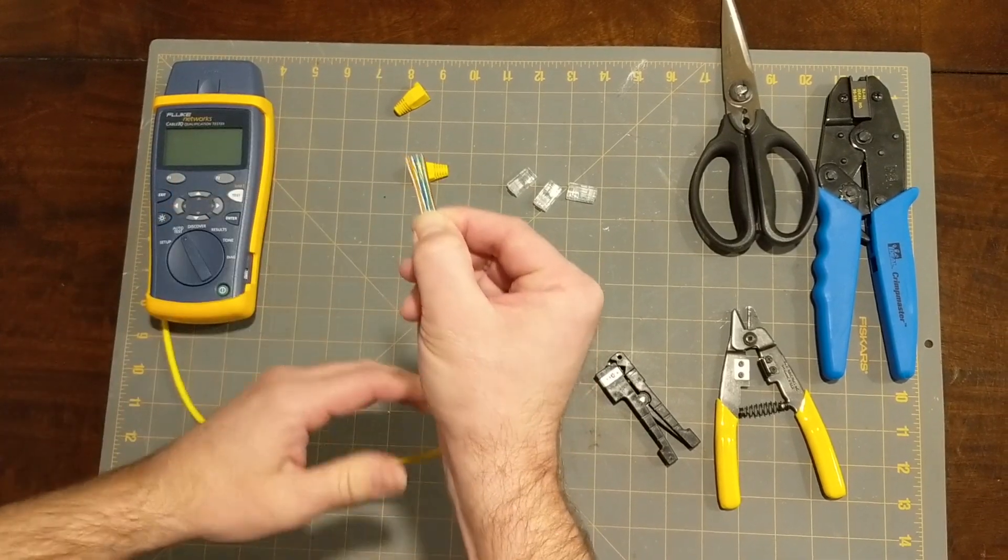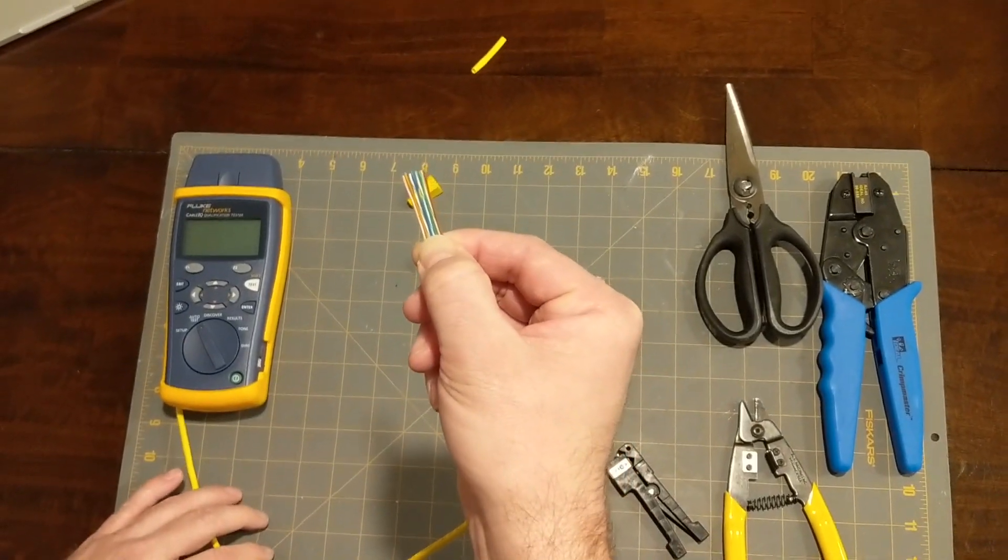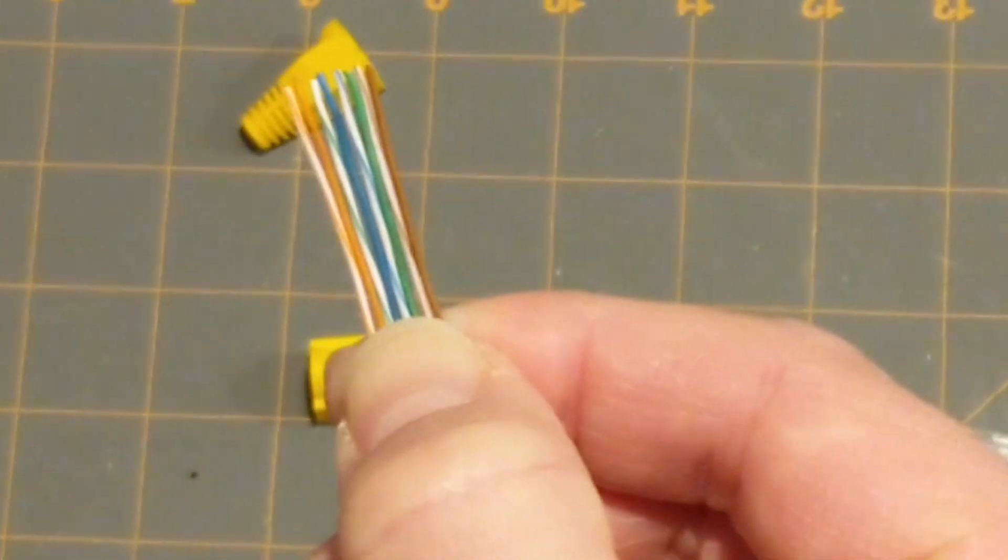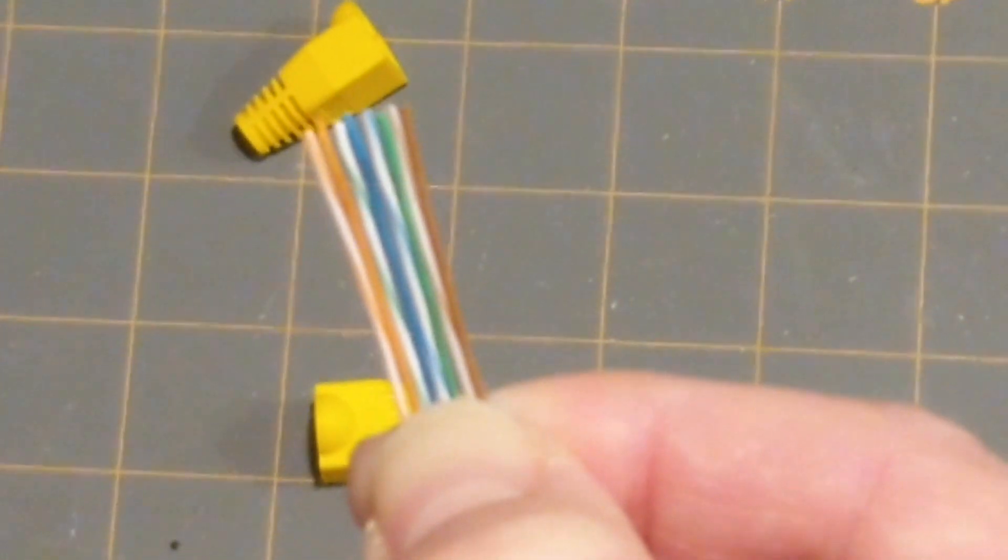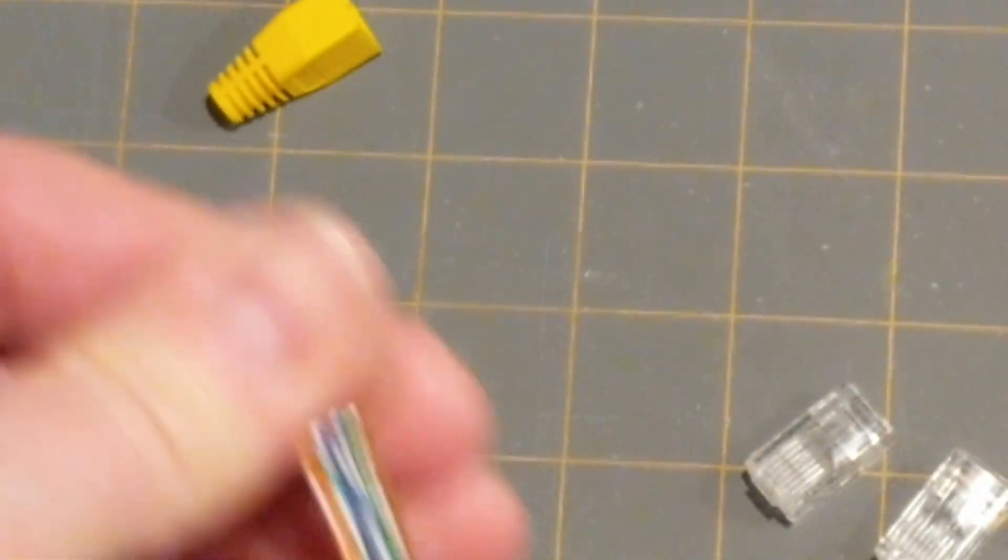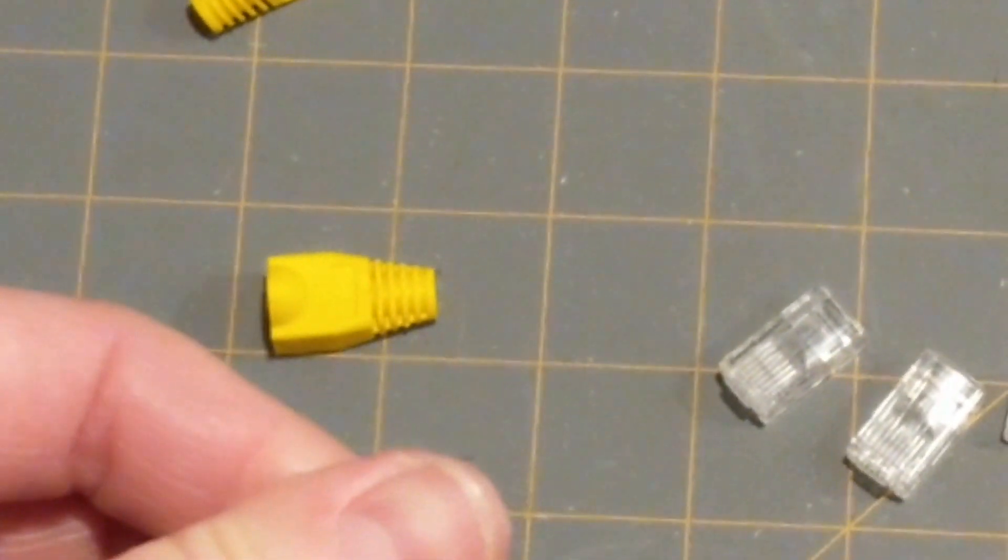So, we've got that. Let's take a close look at that. We've got white-orange, orange. White-green, blue. White-blue, green. White-brown, brown. Okay, they're in the right order. They're all laying side-by-side.